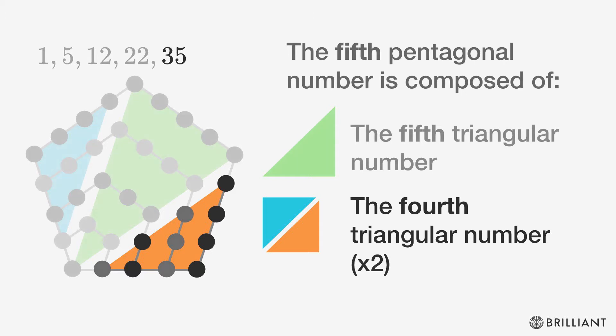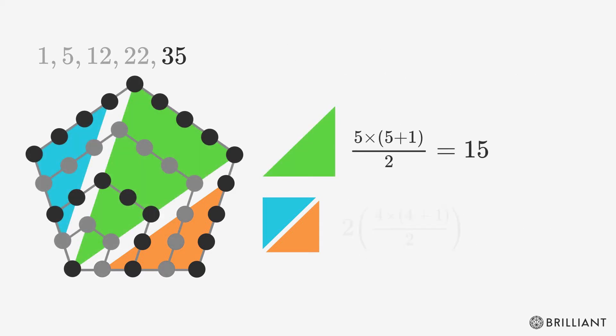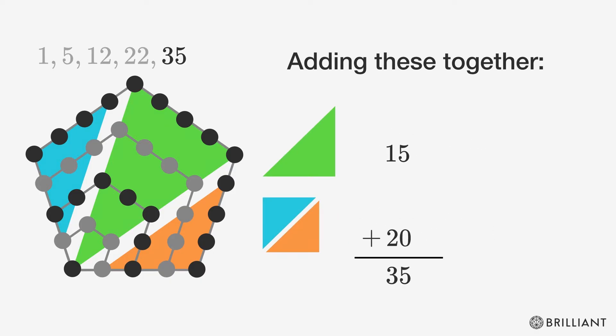We can use the formula from before to find these numbers. Cancel out the twos on the bottom to simplify things. Then we can add these together to find the answer, 35, which is just what we expected.